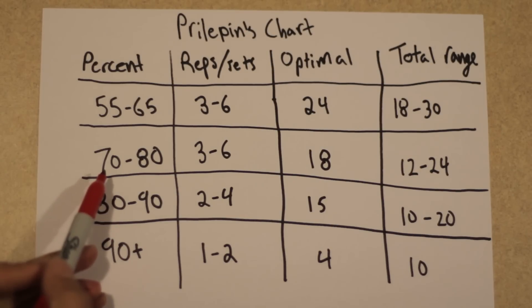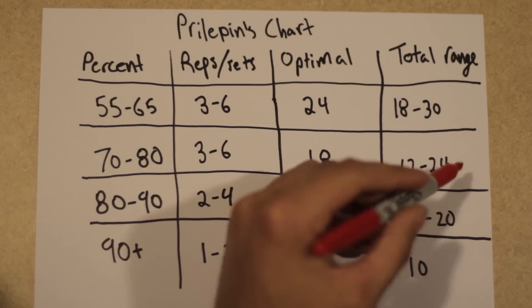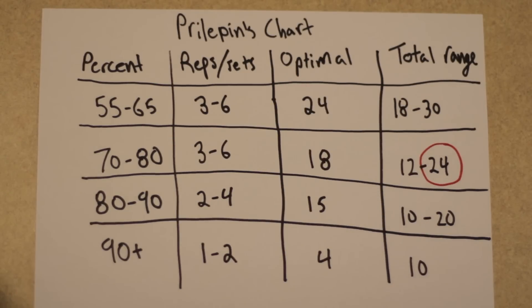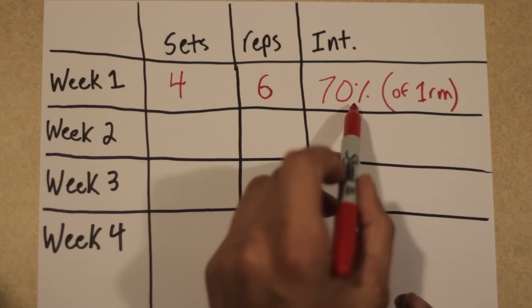Because we are working with 70%, and that is on the low end of Prilipin's percent range of 70 to 80%, we will use the highest possible number of both the sets and reps, and that will give us 24 total reps. So now we have our first squat workout, and that will be four sets of six at 70%.